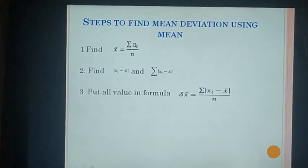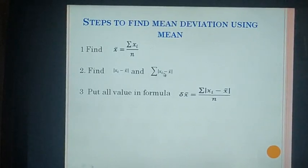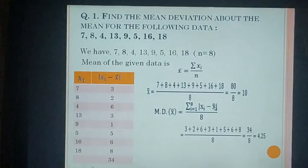The formula for mean is x̄ = Σxi / n. In the next step, we find |xi − x̄| and the sum of |xi − x̄|. In the third step, we put all the values into the formula: δx̄ = Σ|xi − x̄| / n.